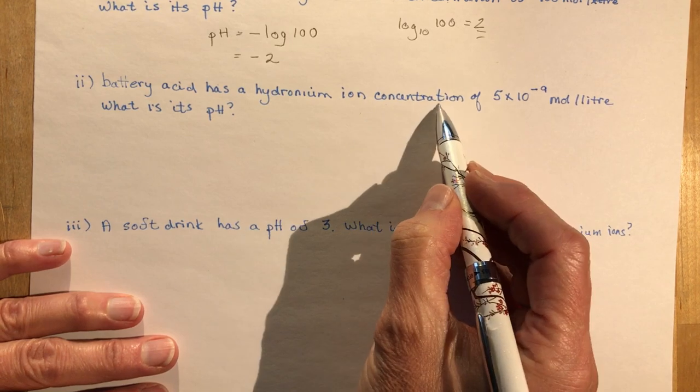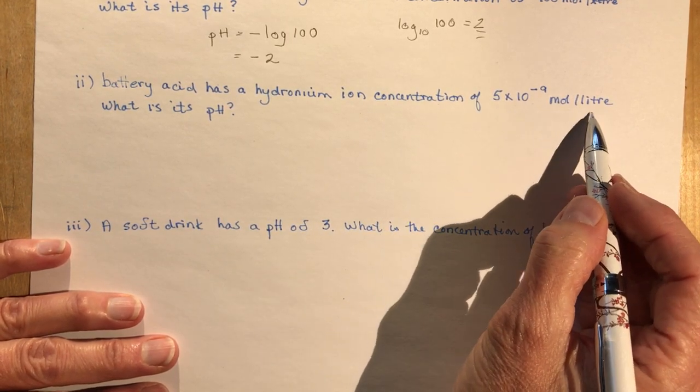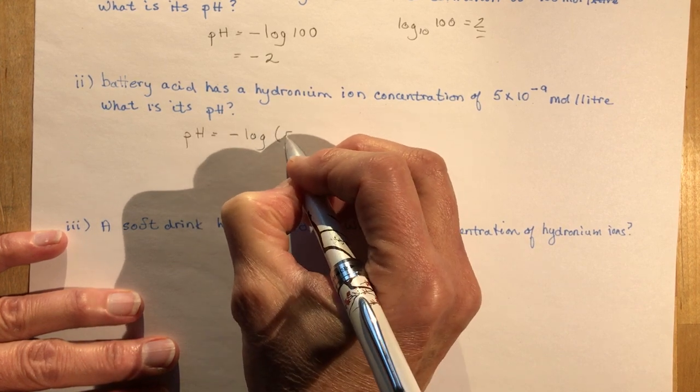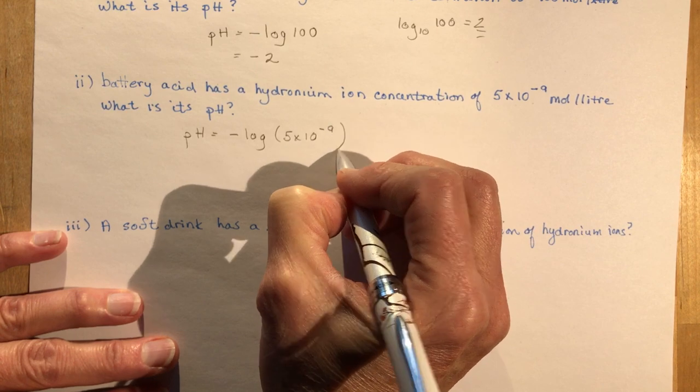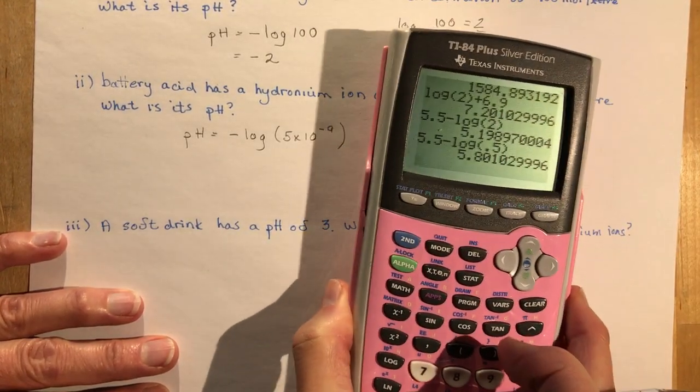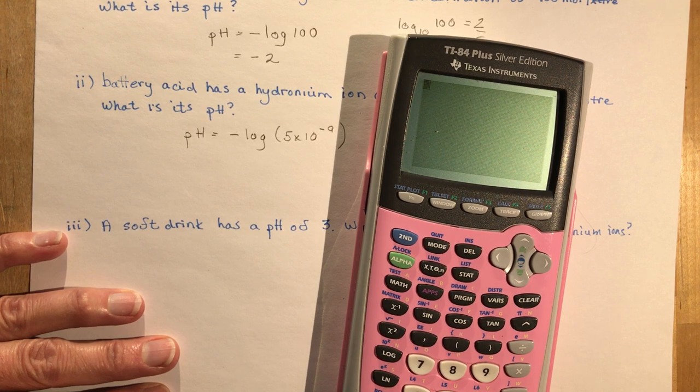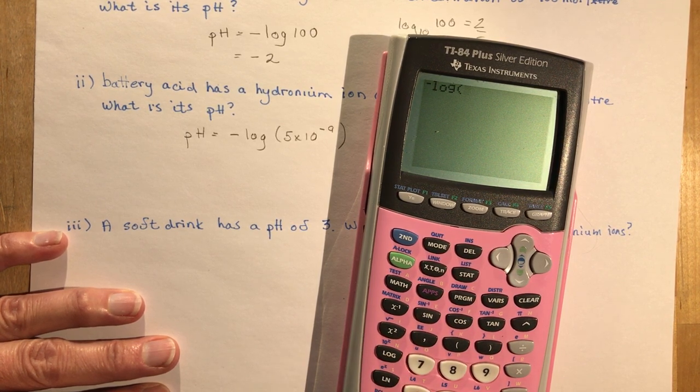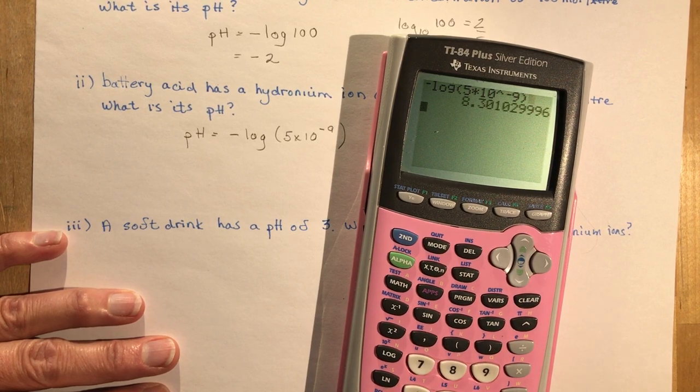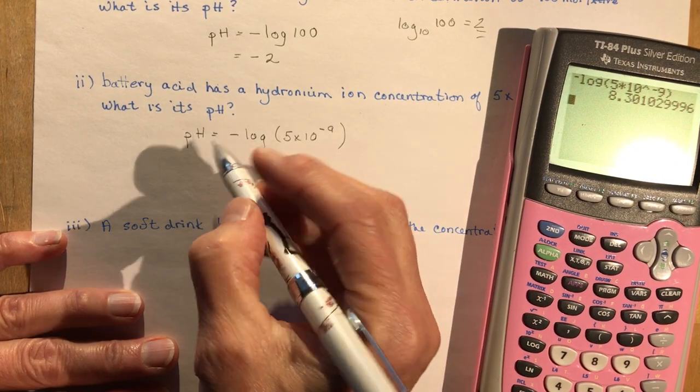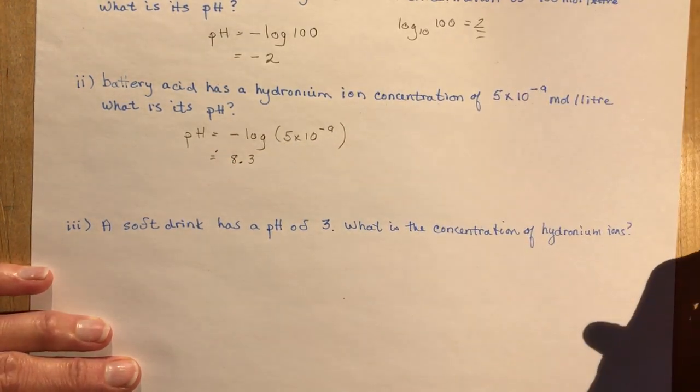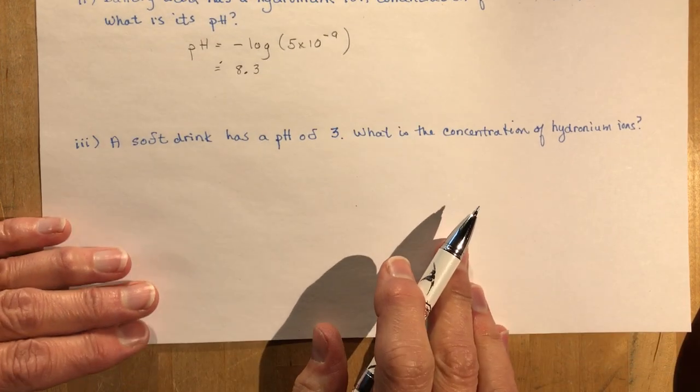Battery acid has a hydronium ion concentration of 5 times 10 to the negative 9 moles per liter. What is its pH? We take the same formula. pH is equal to the negative log of 5 times 10 to the negative 9. We can evaluate that on your calculator. The negative log of 5 times 10 to the power of negative 9 equals, and we get 8.3. So it's a negative of a negative answer, so we get 8.3. Battery acid. Keep away from that stuff.